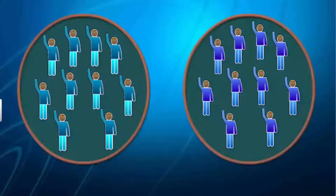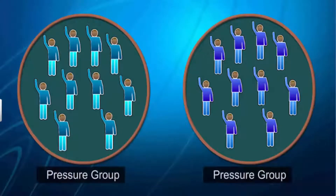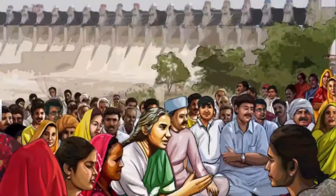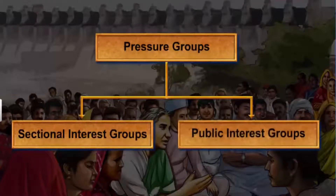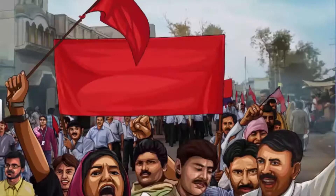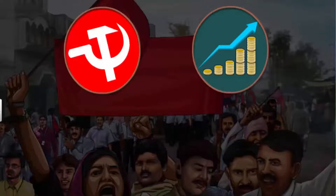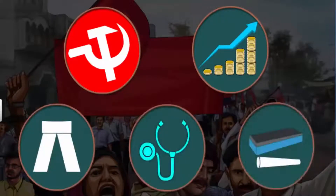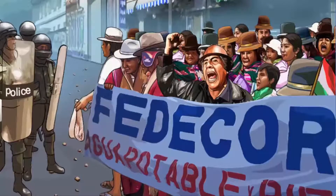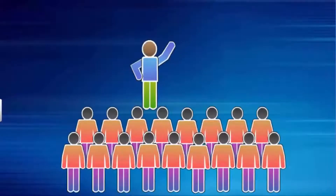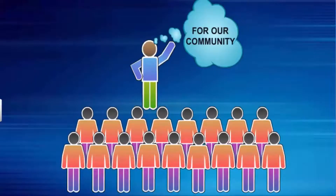Pressure groups are formed when people with common occupation, interest, aspirations or opinions come together to achieve a common objective. There are two types of pressure groups: sectional interest groups and public interest groups. The sectional interest groups promote the interests of a particular section or group of society. Trade unions, business associations and professionals like lawyers, doctors and teachers are associated in this group. Federcor, a Bolivian organization, is an example of such a group. The main objective of a sectional interest group is the betterment and well-being of their members and not the people in general.